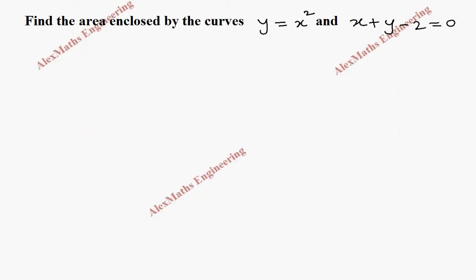Now let's draw the graph for the given curve and line. So we take the x-axis and y-axis. y = x² is a parabola which opens upward with the vertex at the origin. So we have a curve like this.